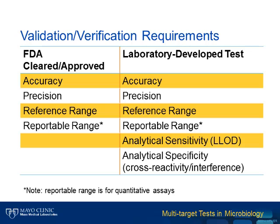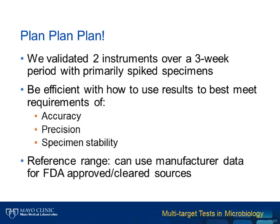I want to share our experience validating a respiratory pathogen panel. We validated two instruments over a three-week period with primarily spiked specimens. There are several companies making whole organism control material that can be used for quality control and for spiking in validation experiments. We found it helpful to be efficient in how we use results to best meet the requirements of accuracy, precision, and specimen stability testing. One specimen often was able to fulfill several of these criteria.